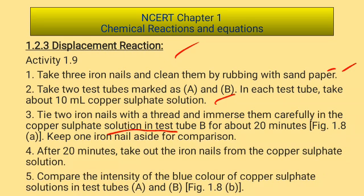In test tube B, leave the iron nails for about 20 minutes. Keep one iron nail aside for comparison. So we have three iron nails — one kept aside and the rest placed in copper sulphate solution for 20 minutes.